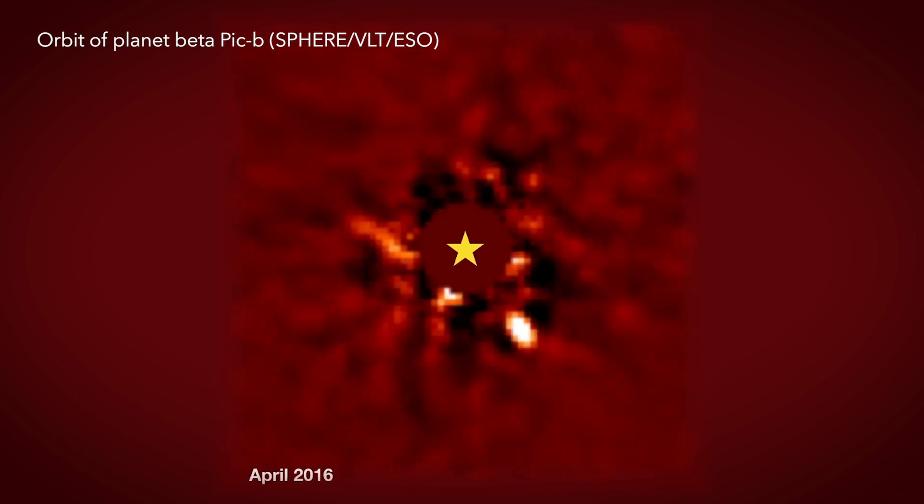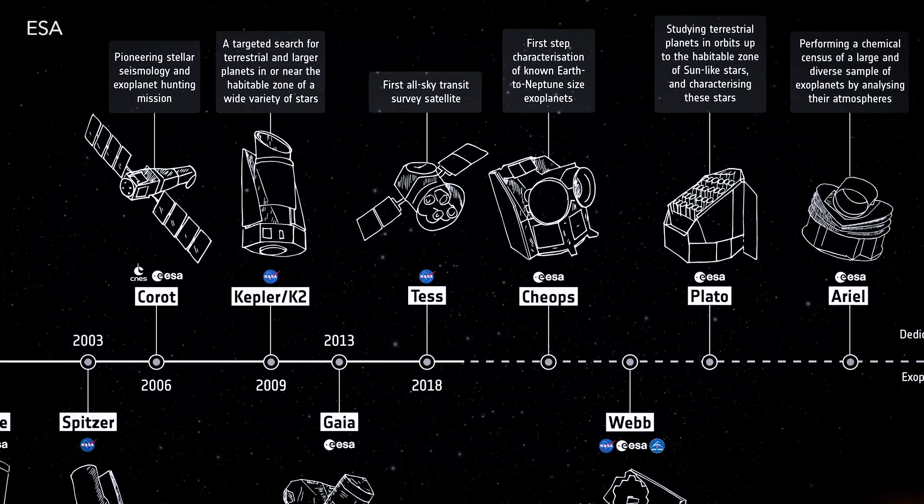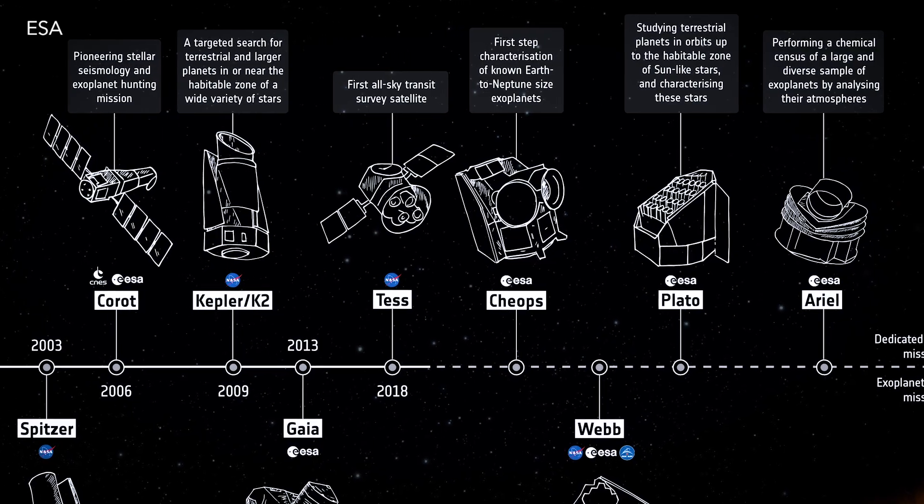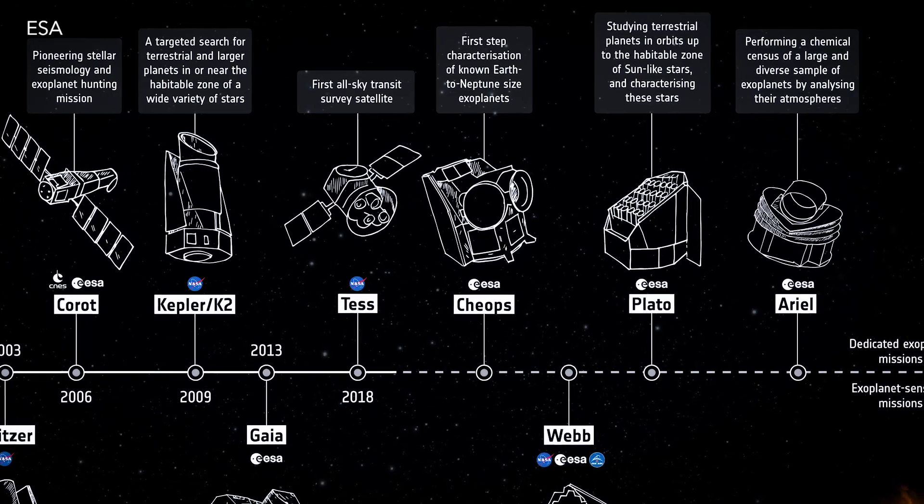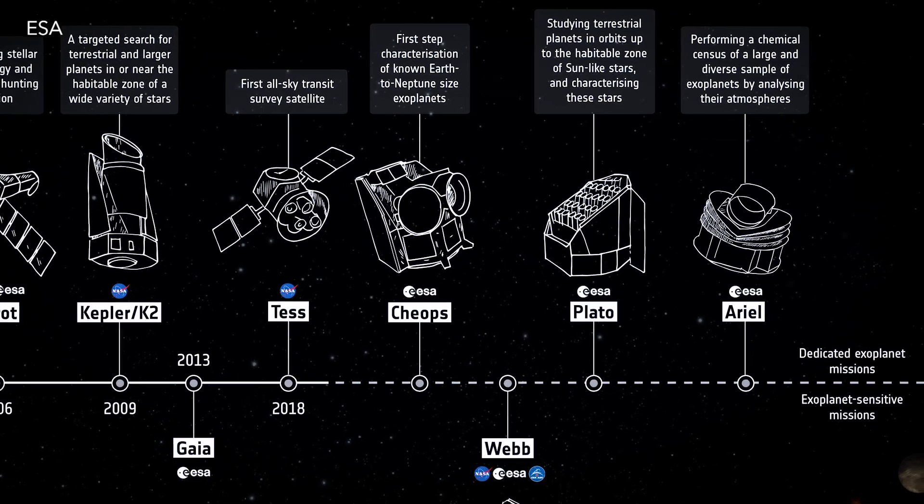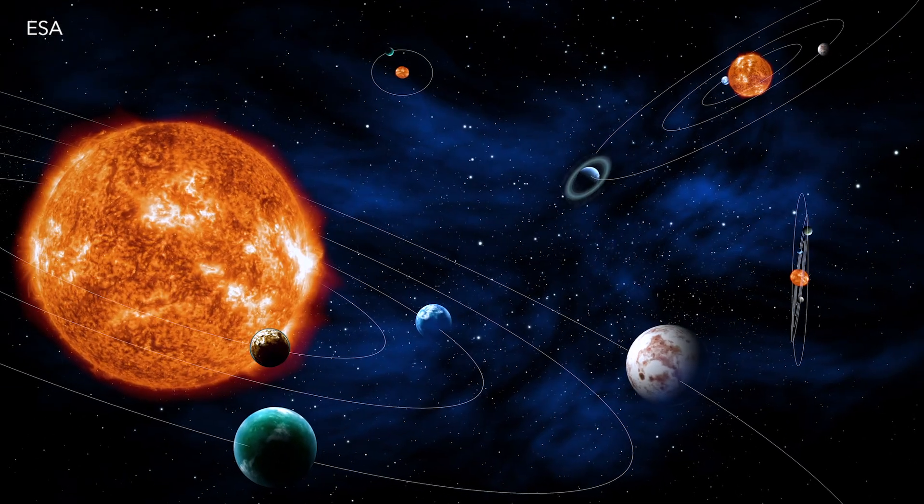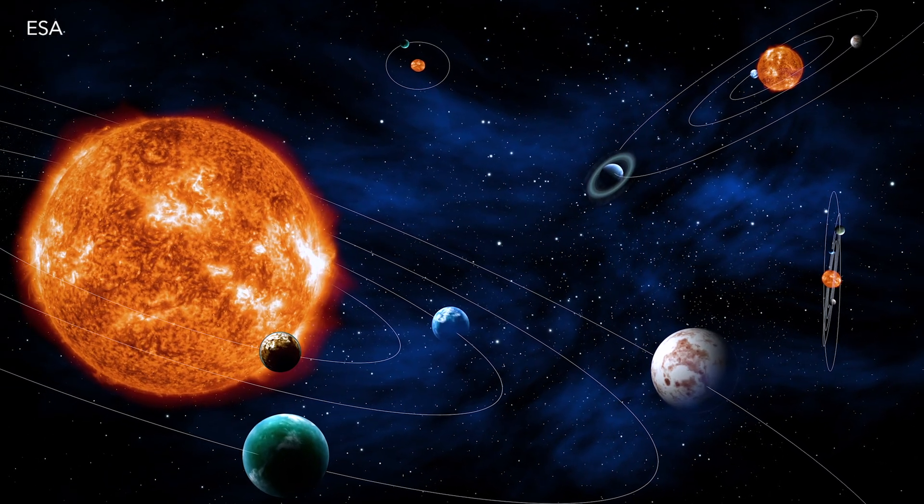The next generation of these transit detection satellites is called PLATO. LESIA plays a very important role with PLATO which will fly in 2026. It will observe the full sky and will provide probably 10,000 planets or more.